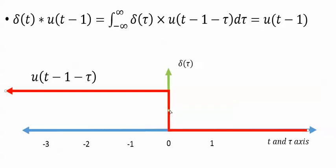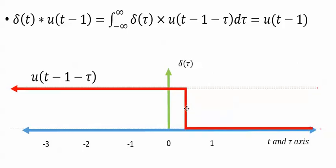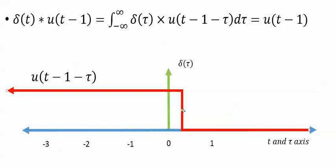All right, then as this continues, we're always sampling the step function. So it's always, in this case, 1 as time goes on.